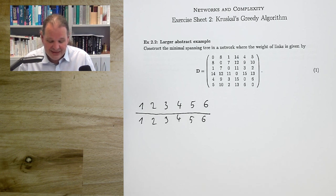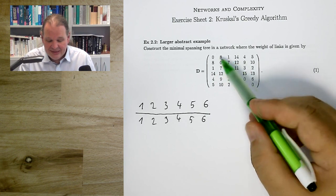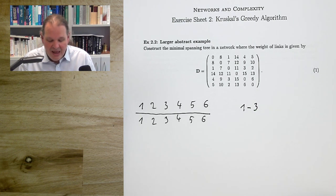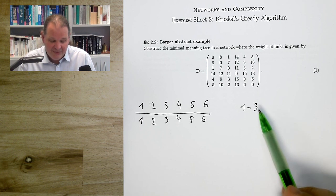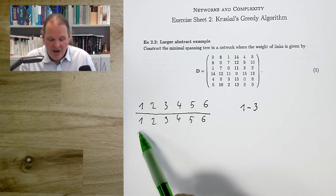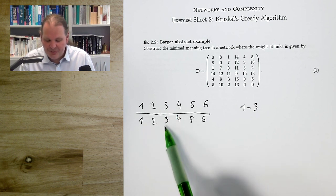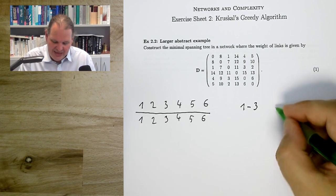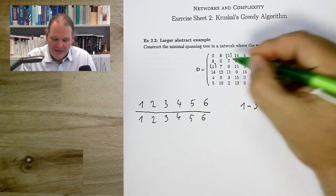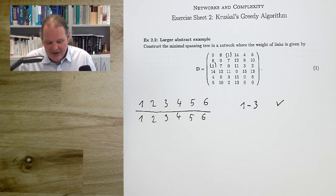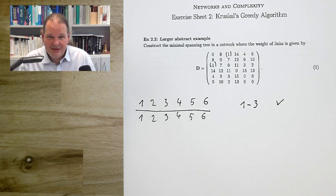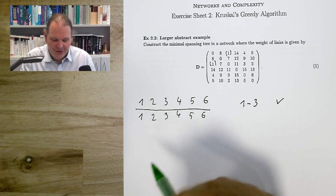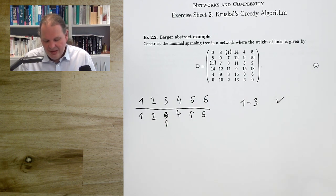We start with the shortest link — length 1 — from node 1 to node 3. Checking the table: node 1 is in component 1, node 3 is in component 3. These are different components, so we place this link. Node 3 is now moved into component 1. First link done.